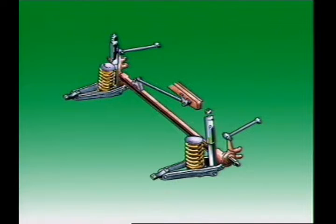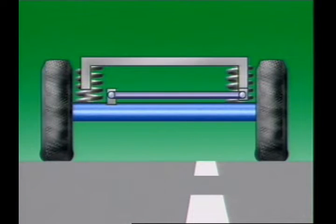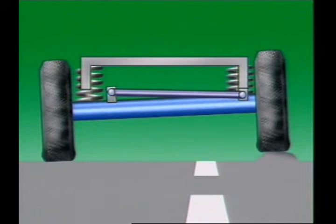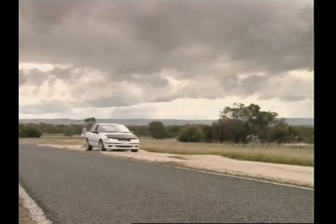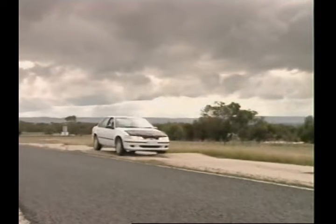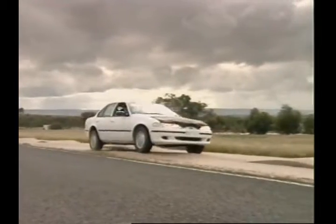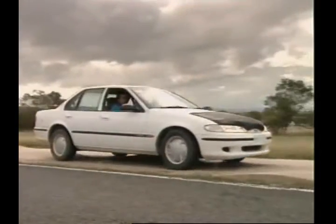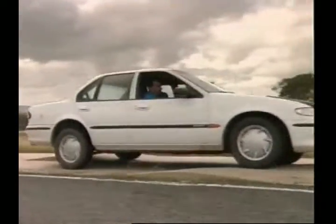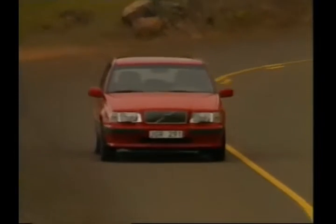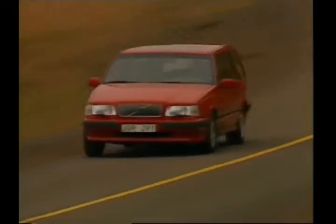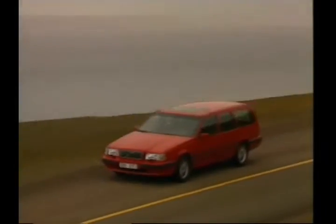Solid or beam axles connect the wheels on each side of the vehicle, meaning the movement of a wheel on one side is transferred to the wheel on the other side. With independent suspension, the wheels can move independently of each other, which reduces body movement by preventing the other wheel from being affected by movement of the wheel on the opposite side.